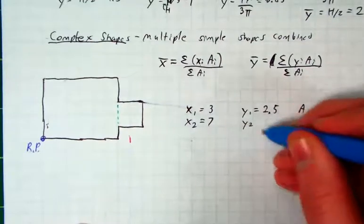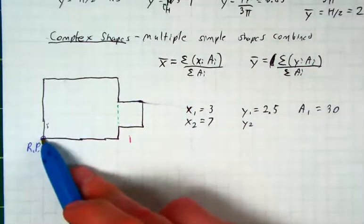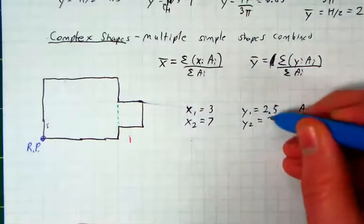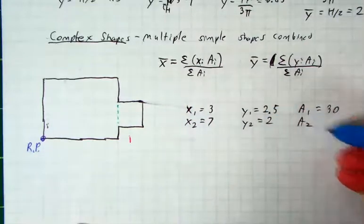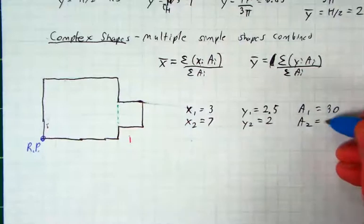Your y2 would be how far away from your reference point in the y direction? Two squares. Very good. And the area of your second shape would be four.